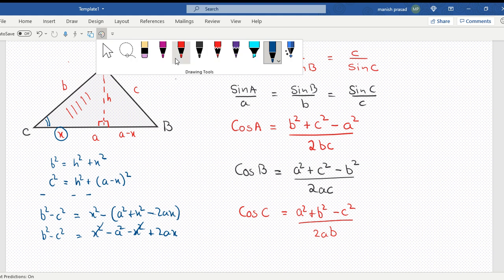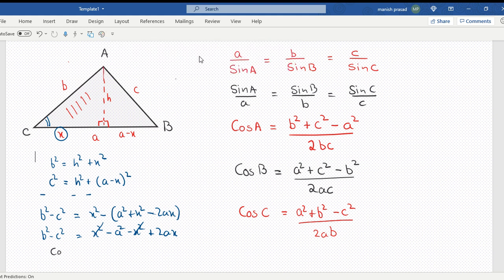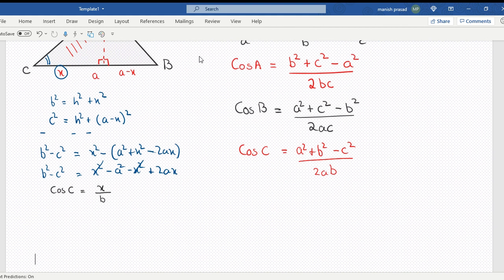Now this is X, which is the base in terms of angle C. So if I take another color and write down, cos of angle C equals the adjacent side by the hypotenuse. So X equals B cos C.